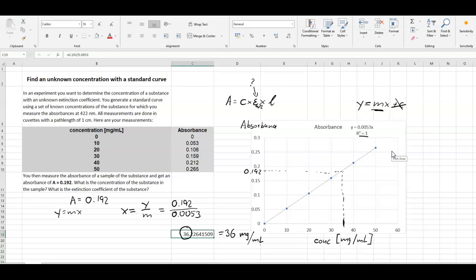And we also want to find out what is the extinction coefficient for this substance. And again, that is very easy because the extinction coefficient is just simply the gradient of this trend line. That is the extinction coefficient.